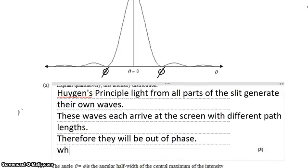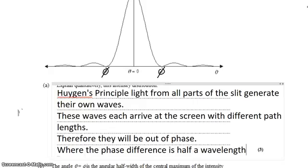Where the phase difference is half a wavelength out of phase, you'll get destructive interference.